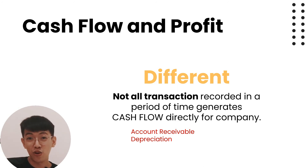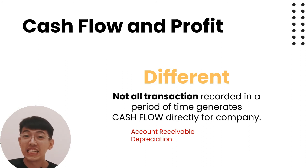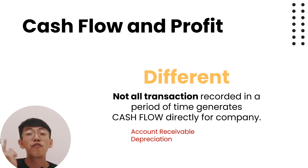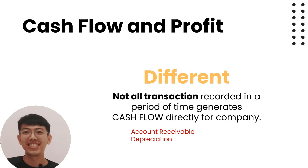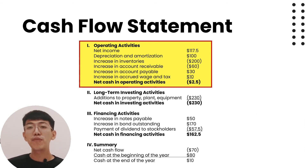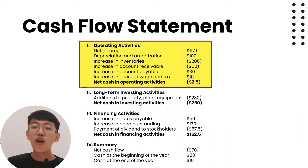Another example is depreciation. Depreciation is an expense for the company, so it will affect profit. But does depreciation make you spend cash? No, it does not. The cash flow statement is divided into three main activities.